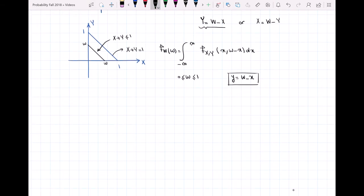For F_W of W, our integral is the integral of F_XY of X and W minus X, dX. Where are my X's changing from? I can see that X is always changing from 0 to W.